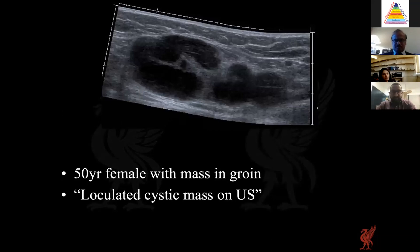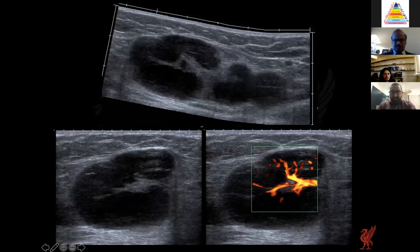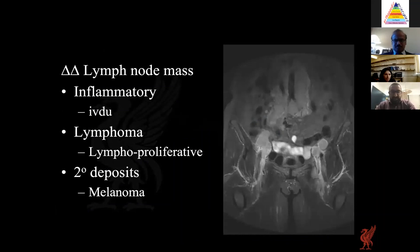Another example of a groin mass was referred as a loculated cystic lesion. On closer imaging review, an echogenic hilum with vascularity was identified and, given its location in the groin, it was likely lymph node in origin. It was diagnosed as lymphadenopathy, which has its own differential including inflammatory, lymphoproliferative, or metastatic causes.